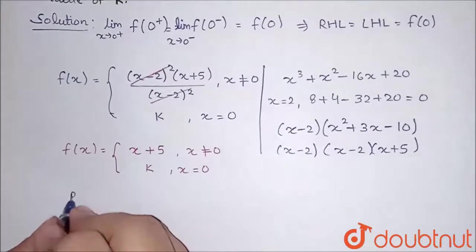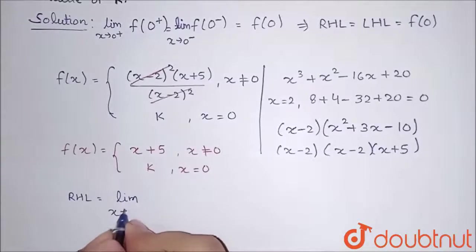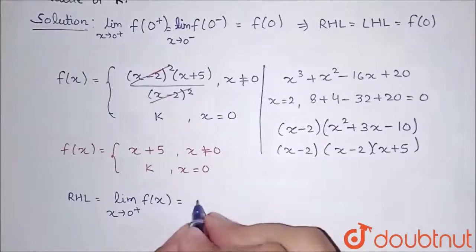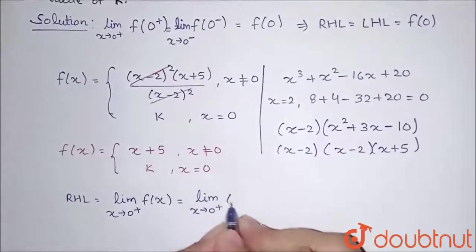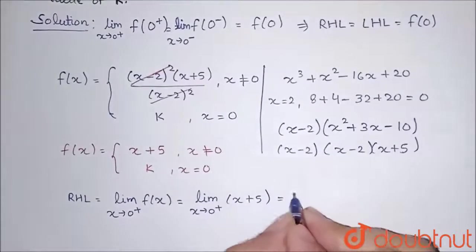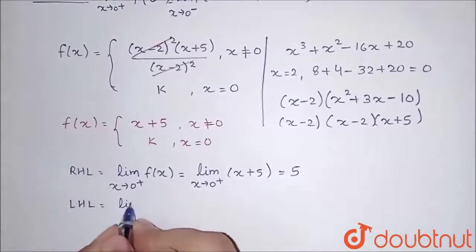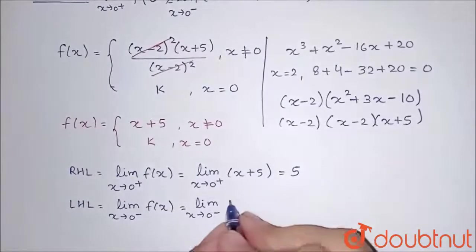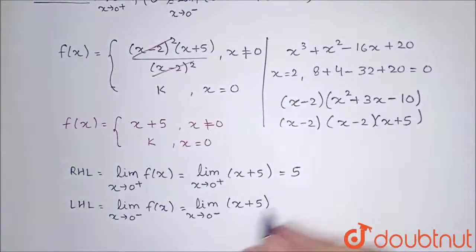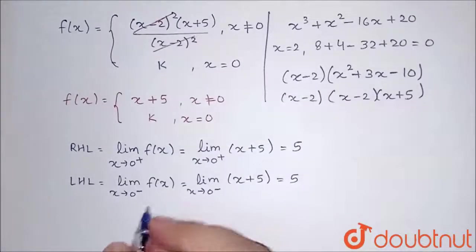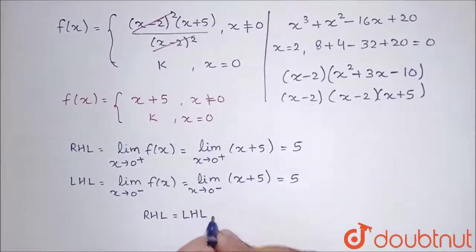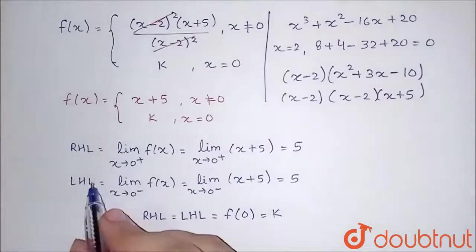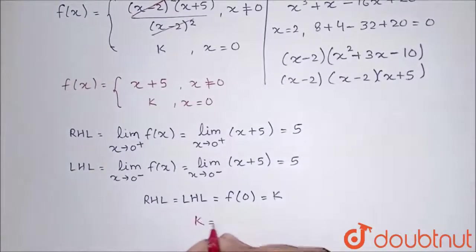Now finding the right-hand limit: limit as x tends to 0 plus of f(x) equals limit as x tends to 0 plus of (x plus 5). Substituting x equal to 0 gives 5. Similarly, the left-hand limit: limit as x tends to 0 minus of f(x) equals limit as x tends to 0 minus of (x plus 5), which also equals 5. Since RHL equals LHL equals 5, and f(0) equals k, for continuity we need k equal to 5.